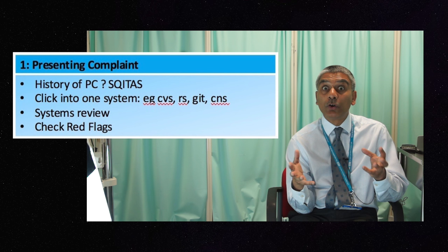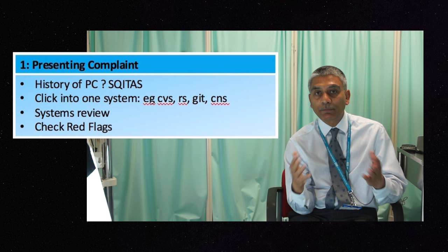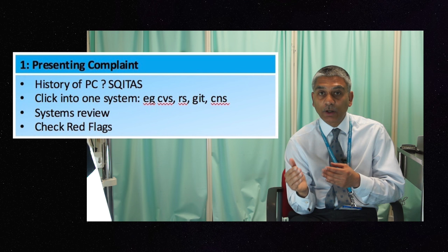It's very important to ask about other systems symptoms, so we would do a systems review and then finish off by recapping the red flags — for example, blood anywhere, lumps and bumps anywhere, weight loss, change in appetite, and change in bowel habit.